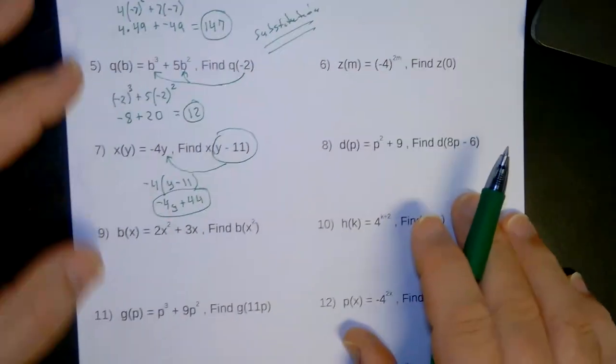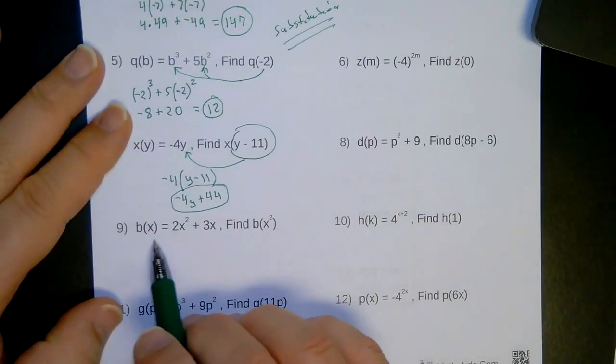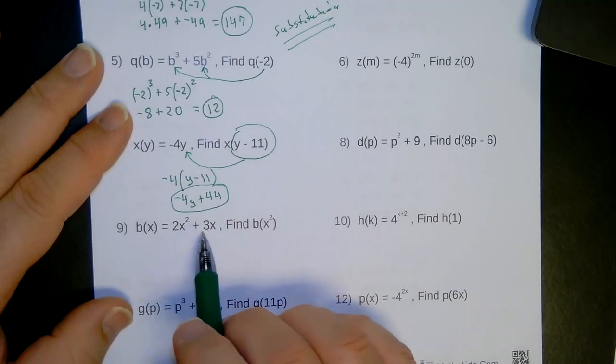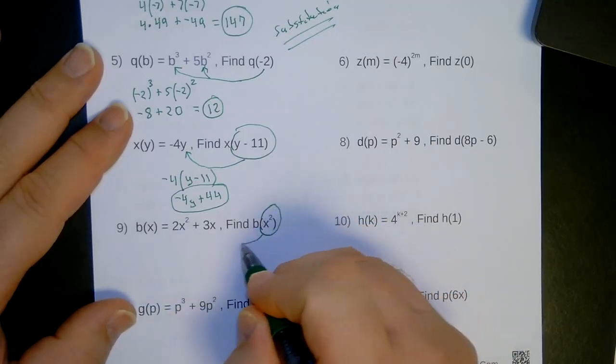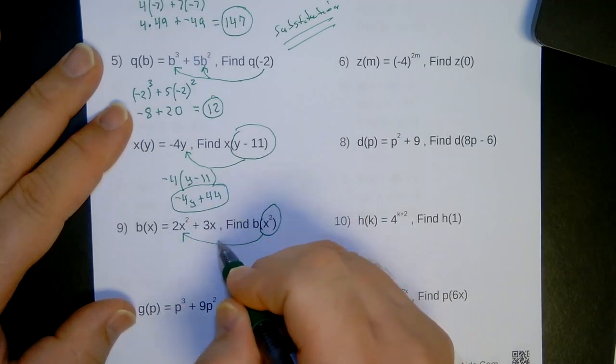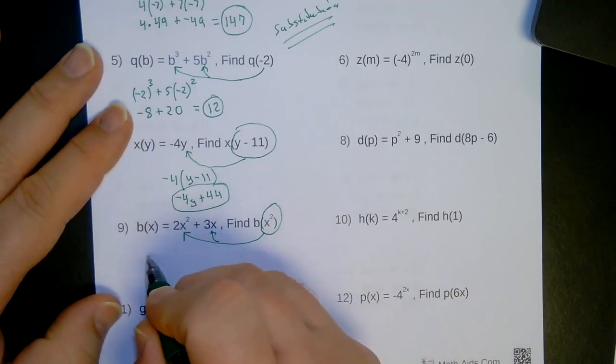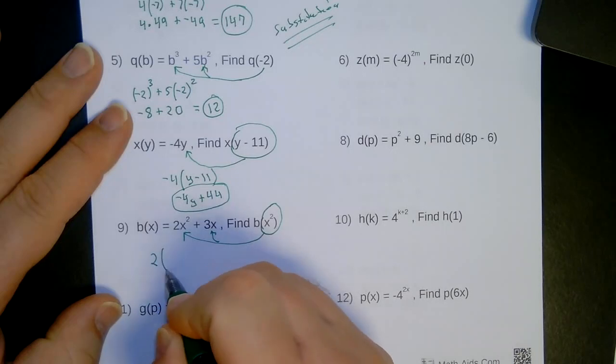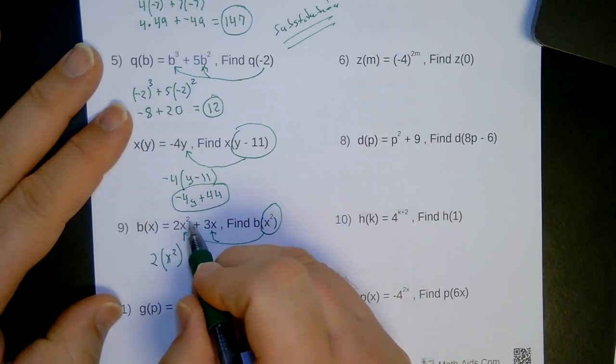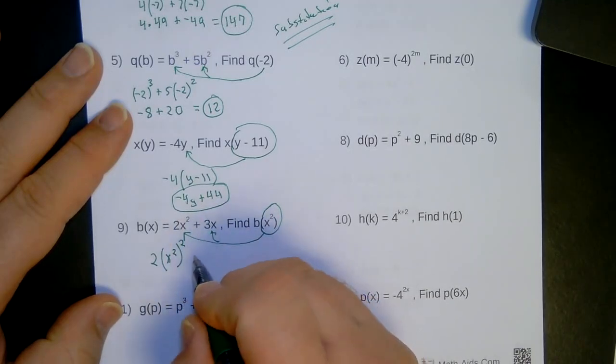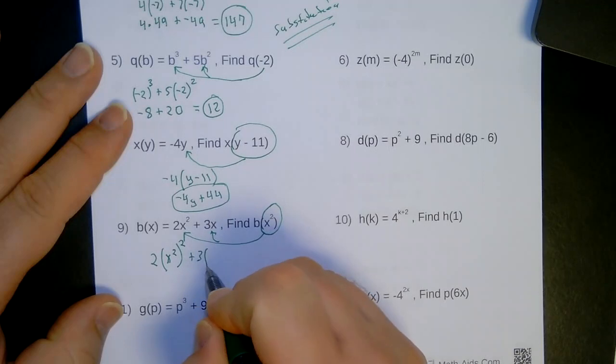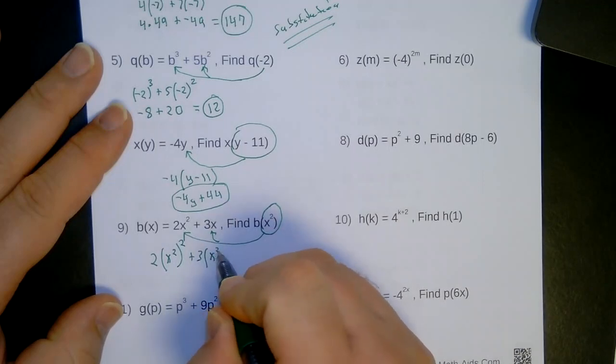Alright. Going on. Number 9. Okay. The function of b(x) equals 2x squared plus 3x. I'm substituting all of that wherever I see an x. It's got to go in both spots. So let's do the first one. Two parentheses. Make sure you're at x squared. And then I'm going to square it. So don't forget that second square there. Plus 3 parentheses x squared.